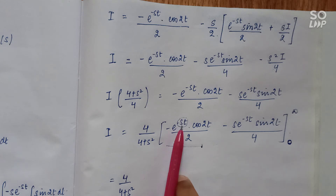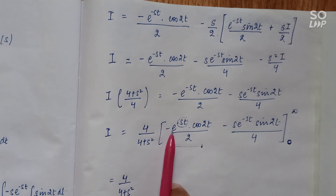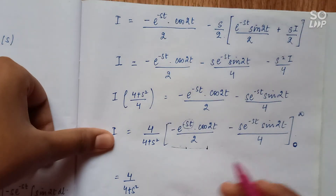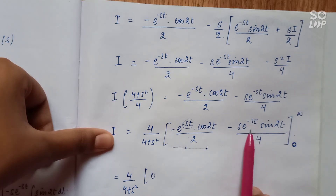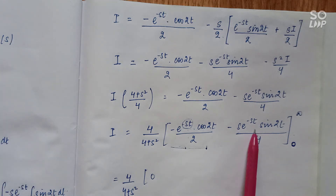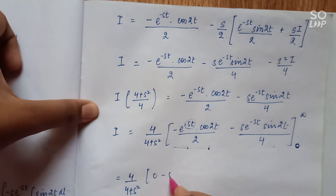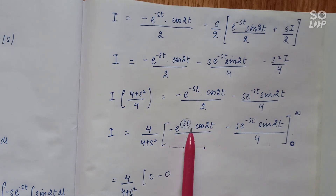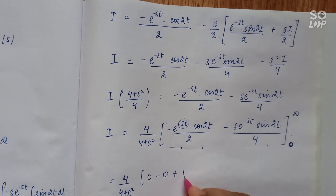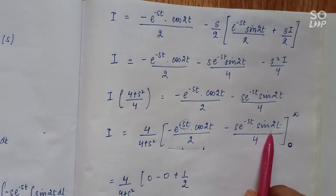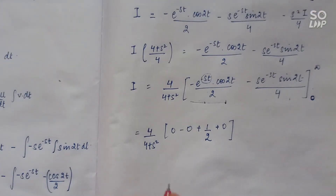There is one condition: s must be positive, because if s were negative, e^(-st) would become e^(+infinity) and the expression would be infinite and unsolvable. So with s positive, the entire term at t = infinity is 0. At t = 0, sin(2t) becomes sin(0) = 0, e^(-s·0) = 1, and cos(0) = 1, so we get e^(0)·cos(0)/2 = 1/2 from the cosine term, and the sine term contributes 0.